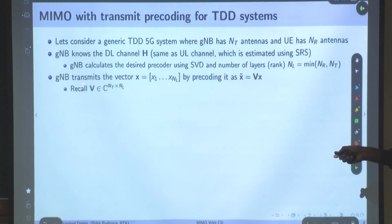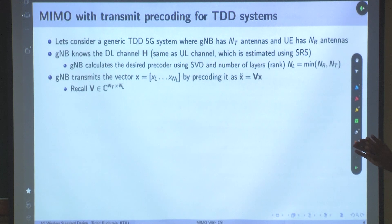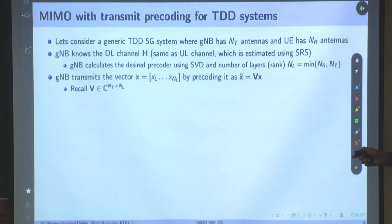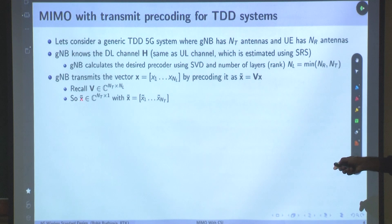How is V generated? V Hermitian was NL×nt, so V will be nt×NL. Hermitian means you take a transpose with a conjugate. V is of this size, and x is NL×1, so dimensions match: V into x is nt×NL into NL×1. The dimension of x̃ is nt×1 — a column vector of size nt×1, with components x̃1 to x̃nt.